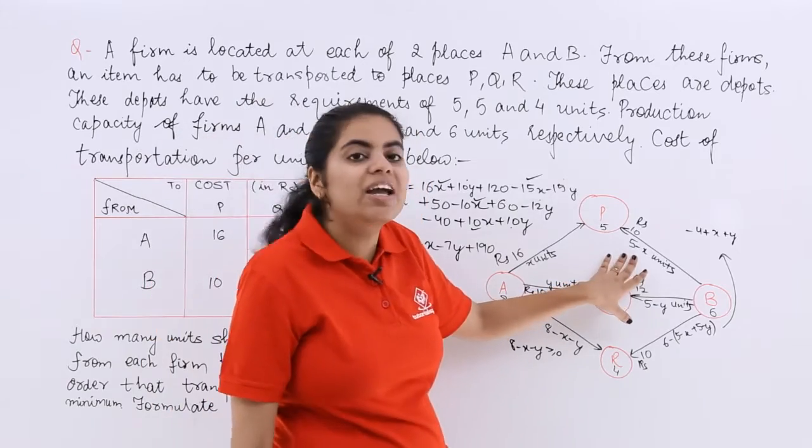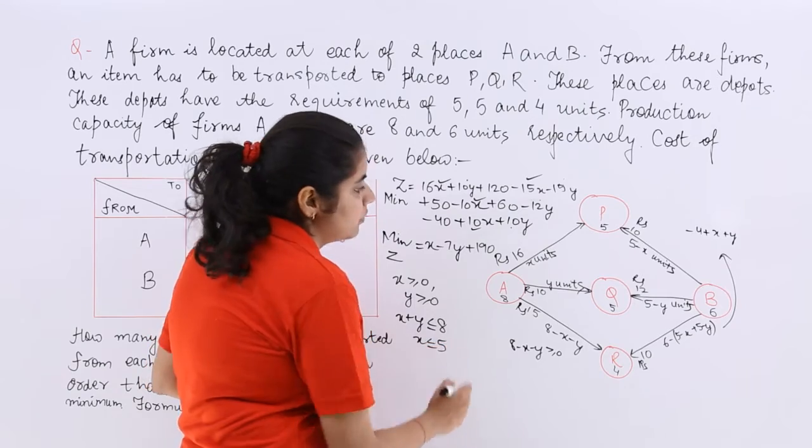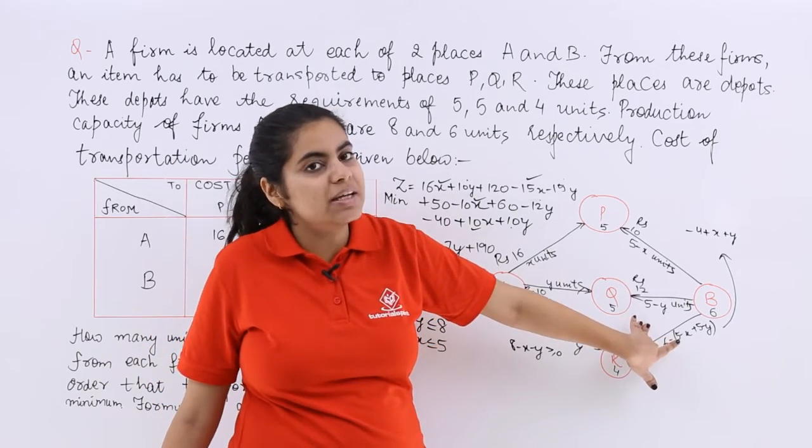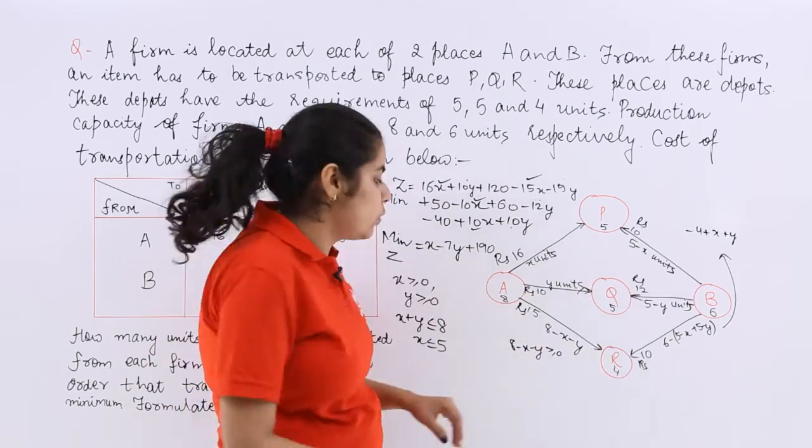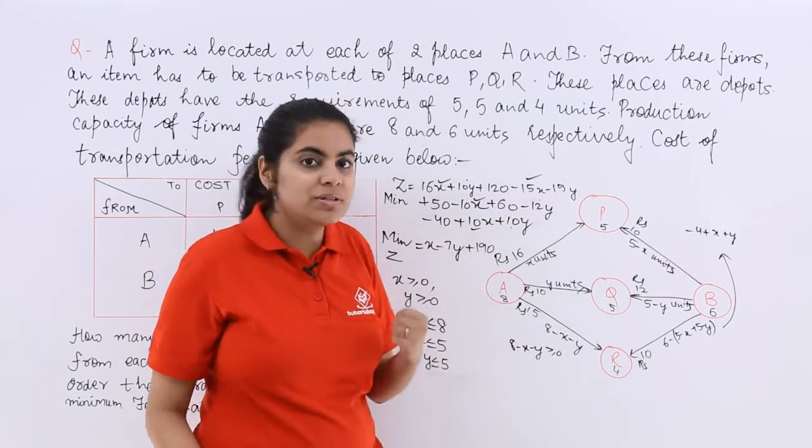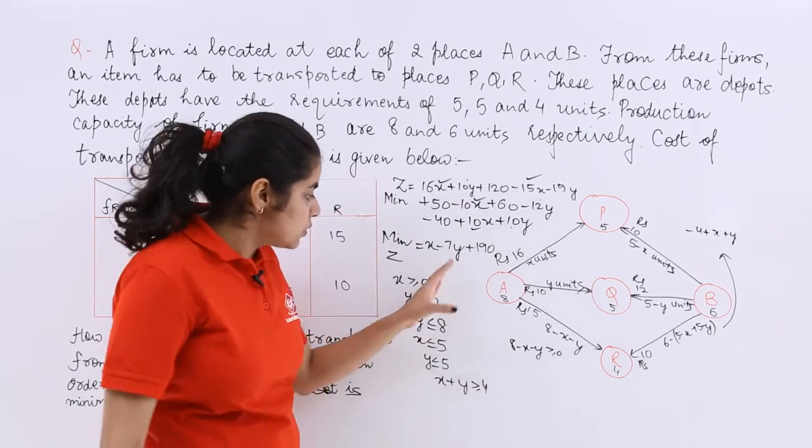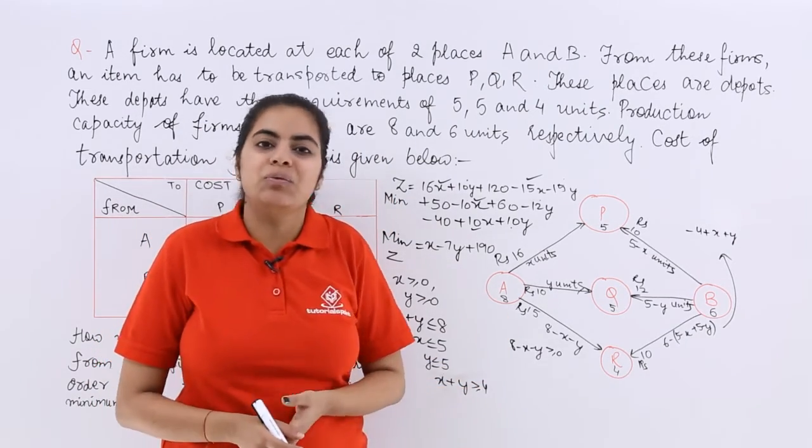Moving here, 5-X is greater than equal to 0. So X is less than equal to 5. Moving here, 5-Y is greater than equal to 0. Y is less than equal to 5. Now X plus Y minus 4 is greater than equal to 0. So X plus Y is greater than equal to 4. So these are the constraints and this is how you do it.